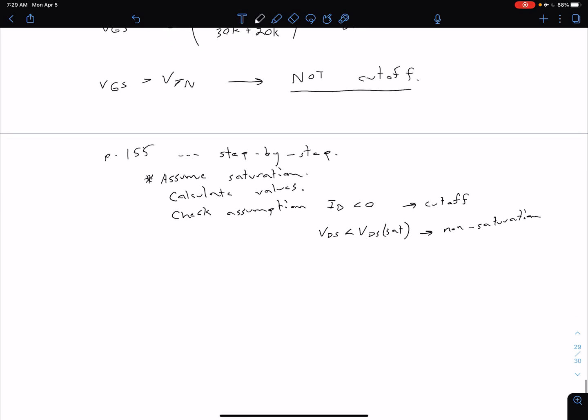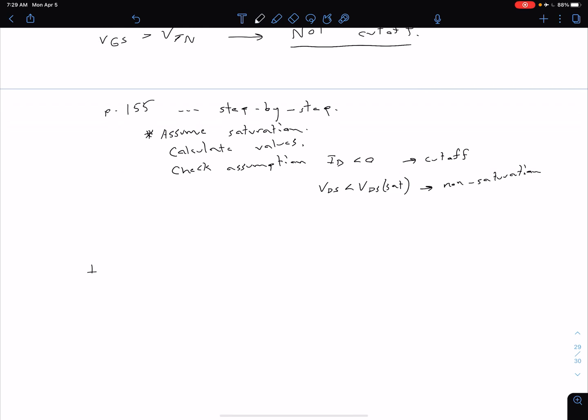And so what that means is we use our drain current equation for the saturation region. So we can say that our ID is equal to KN times VGS minus VTN, that quantity squared. So plugging in our known values. So remember our KN, our conduction parameter, was given as 0.1 milliamps per volt squared. We just found our VGS was 2 volts. And our VTN is given as 1 volt. So we square that. And so we can see our units, the volts squared canceling out with the volts squared in the denominator of KN. And we're going to be left with 0.1 milliamps for our ID.